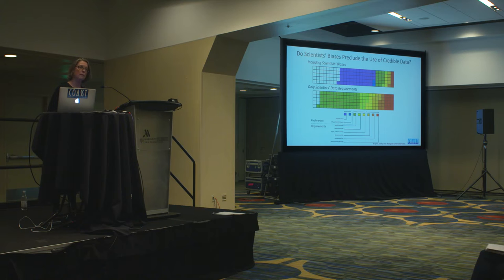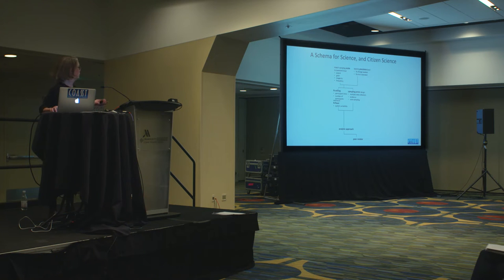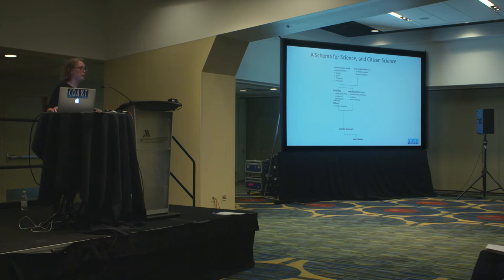If our aim is to get the public involved — science in the public eye — one of the things we have to do is tell the science community that part of that marriage has to be them reassessing who they are. Here's a schema for science: when thinking about a science project, you come up with a sampling scale, identify a precision level, set a ceiling and floor to your sample size based on sampling error, develop an analytical approach, and eventually arrive at a peer-reviewed publication.